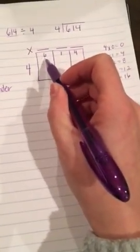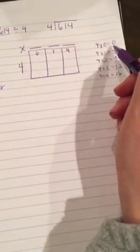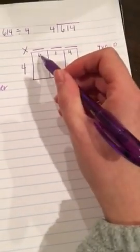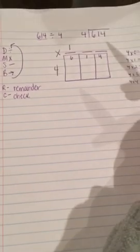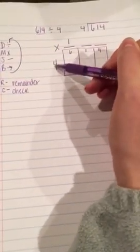Four times what will get me close to 6 without going over? Four times 0 I wouldn't go over, four times 1 I wouldn't go over, but four times 2 would be too big. So my best bet is to pick 4 times 1. In my answer spot up here, I'm going to put the number 1—I divided it. Next, I'm going to multiply: 1 times 4 is 4, and I put that directly under my 6.